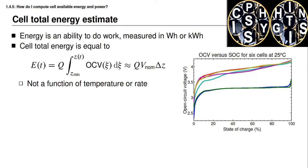Notice that the equation for energy is not a function of the magnitude of current used to withdraw that energy — in other words, it's not a function of rate. To the first order it's also not a function of temperature. We have already noticed that the total charge capacity of a battery cell is not a function of temperature, and while the open circuit voltage relationship has a slight temperature dependence, it's not enough to change the available energy significantly.